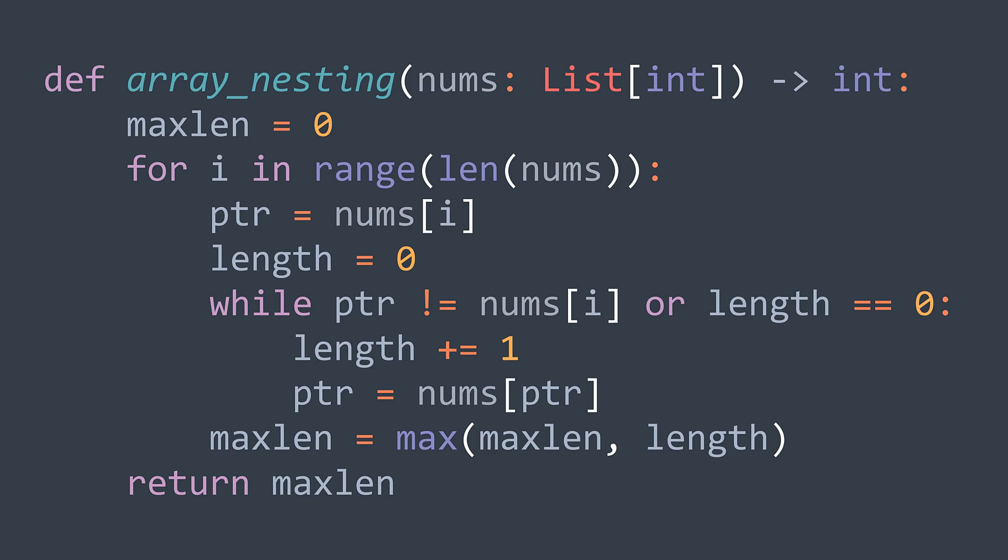After traversing the whole sequence, we check if it's longer than the actual longest one. maxlen becomes max between itself and the sequence length. After the loop, we return maxlen.